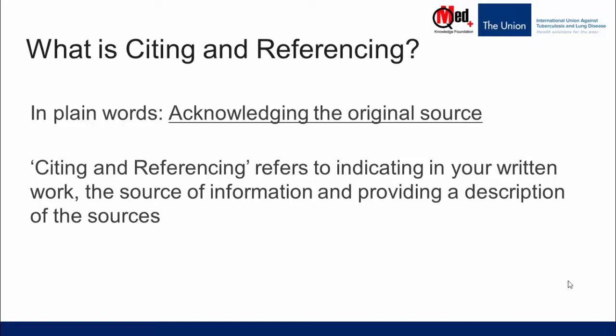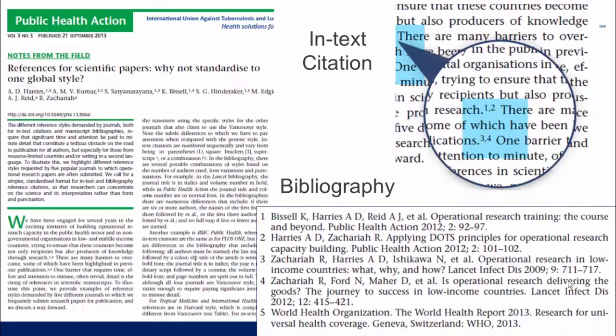What is citing and referencing? In plain English, this is nothing but a way of acknowledging the original source of an idea or information. More formally, it's a system used in written work to indicate where we got the idea from and to provide a description of those sources. There are two terms here: citing and referencing, which constitute the two essential components of any reference.